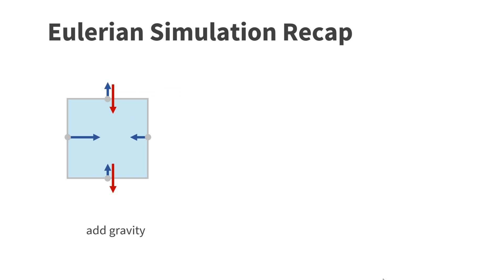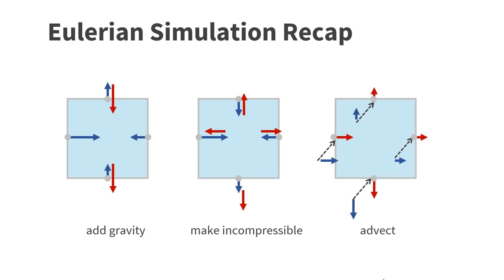In each simulation step, we first add gravity to the vertical velocity components. Next, we make the fluid incompressible by making sure that the amount of fluid that enters a cell is equal to the amount of fluid that leaves it. Finally, we move the velocity field along itself in the advection step.